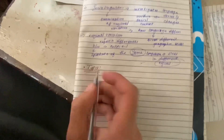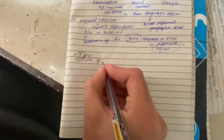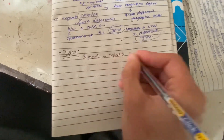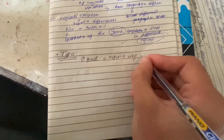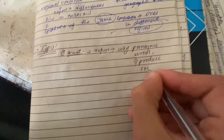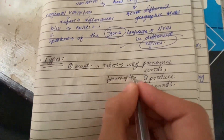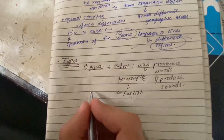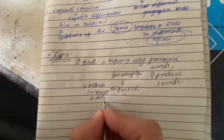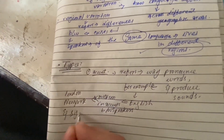Regarding types of regional variation: firstly, accent refers to the way individuals pronounce words and produce sounds in a particular language. For example, in English there are variations in accents between speakers from London, New York, and Sydney.